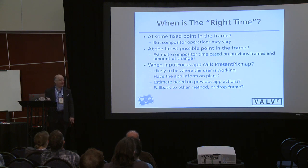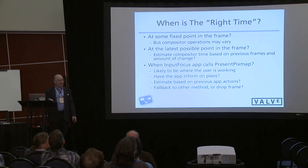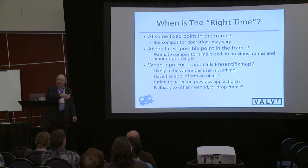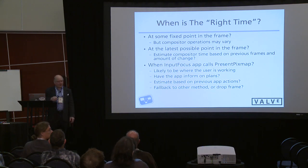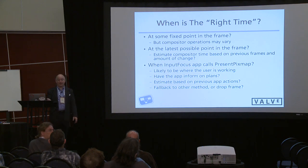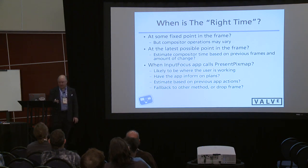It would be nice if the application would tell me whether it plans to do a present this frame — for example, 'I'm running at 30 Hz right now, so if you get stuff from other applications for the intervening frames, go ahead and display if you like.' And of course if the application never presents a frame, I'll have to fall back on other heuristics, which may make things more complicated.